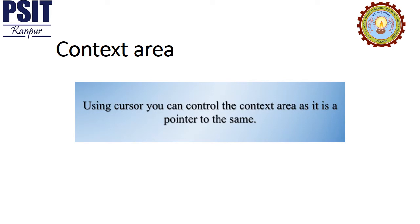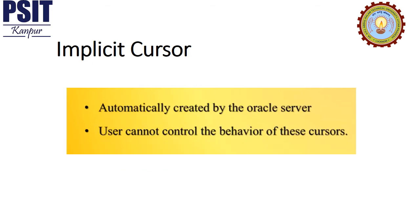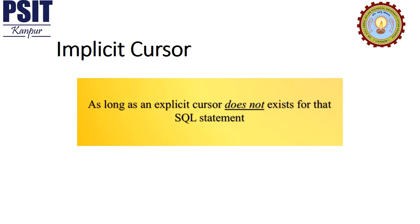There are two types of cursors. The first one is implicit cursor and the second one is explicit cursor. In Oracle Database, as the name suggests, implicit cursors are automatically created by the Oracle server every time an SQL DML statement is executed. The user cannot control the behavior of these cursors. Oracle server creates an implicit cursor in the background of any PL/SQL block which executes an SQL statement, as long as an explicit cursor does not exist for that SQL statement.